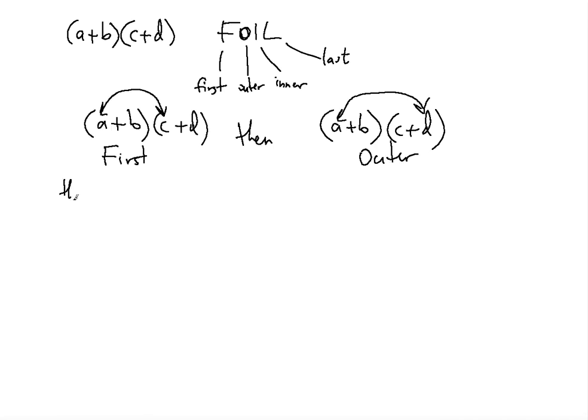Then we will have the inner. Inner means the closest ones. The closest ones are b and c. That is the inner step. And by the way, these are steps, products. Each step is a product.